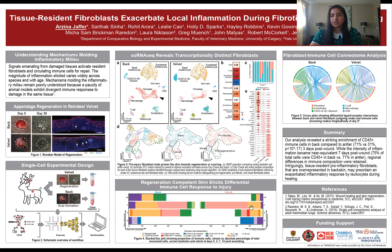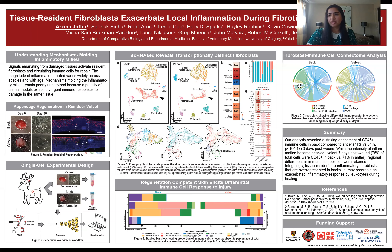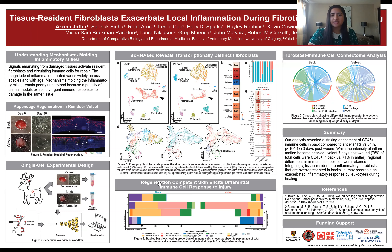You also see a tenfold enrichment of CD68 CSF1 positive myeloid cells present in the velvet compared to the back, which are more of an immunosuppressive type of immune cell. So now that we know the fibroblasts are different and the subsequent immune response is different, how do those two interact? To understand this, we performed a connectome analysis, which shows the interactions between different cell types. At day 0, the fibroblasts, shown in red, interact more with myeloid cells and macrophages in the back, compared to the velvet, where fibroblasts interact more with endothelial and VSM cells. It is perhaps these differences in fibroblasts that result in differences in interactions, and ultimately the differences in the immune response and wound healing outcome — either regeneration or scar formation.